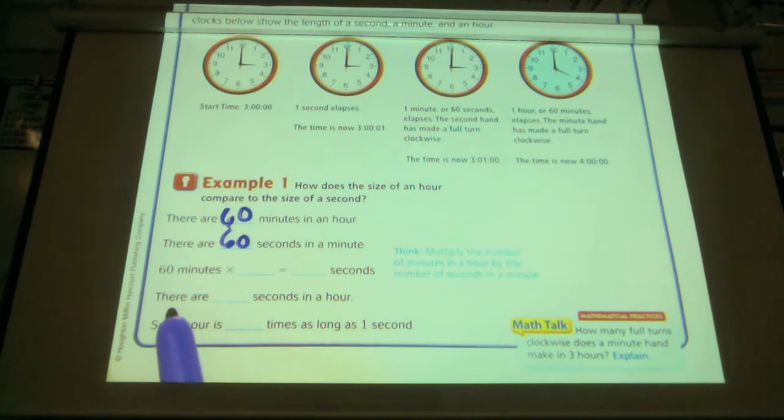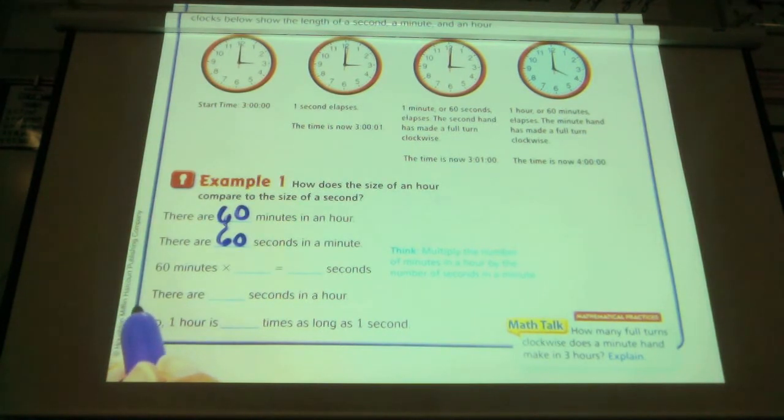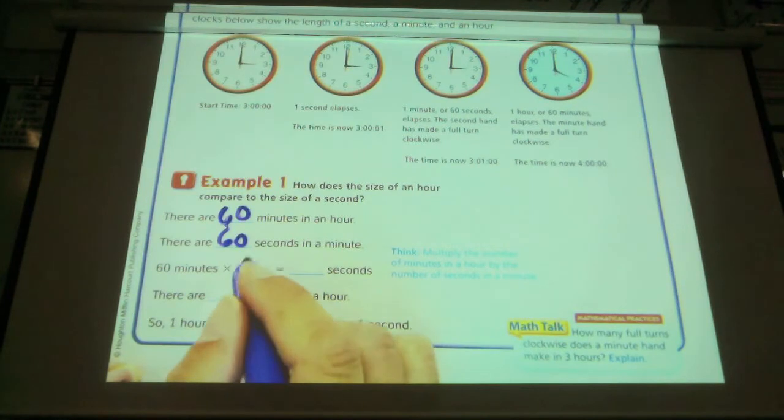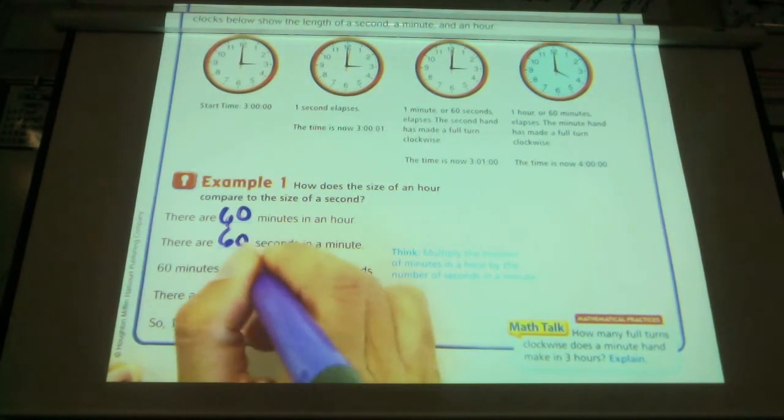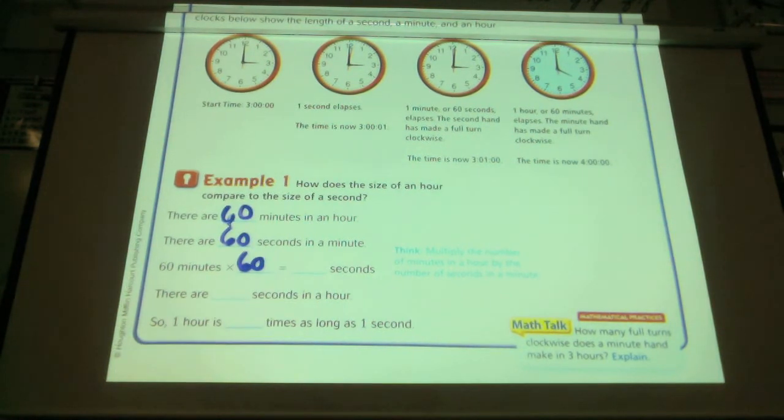So, if we're trying to find out how many seconds are in an hour, we can multiply the number of minutes that are in an hour, which is 60, times how many seconds were in one minute? Sixty. We can multiply 60 times 60 to find out how many minutes. Go ahead and do the math right now on your own. If you have 6 times 60, what is 6 times 60? Owen. Three hundred and sixty. Three hundred and sixty, right?